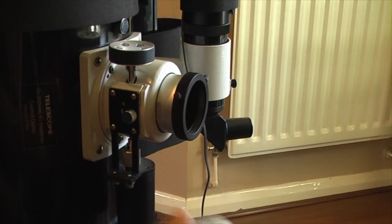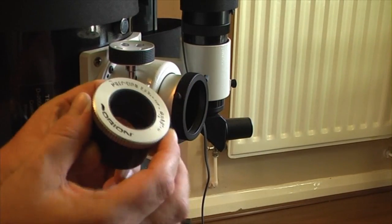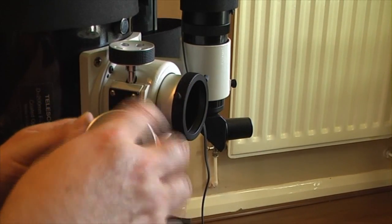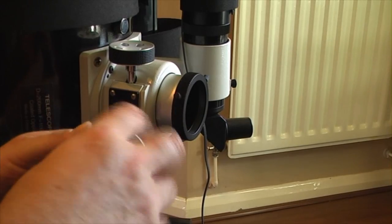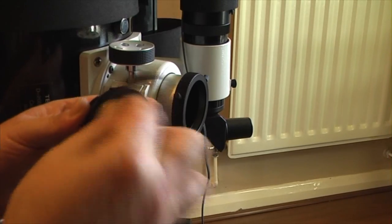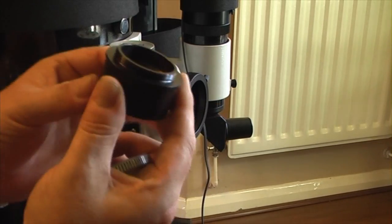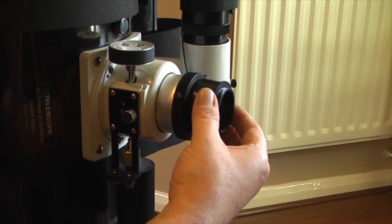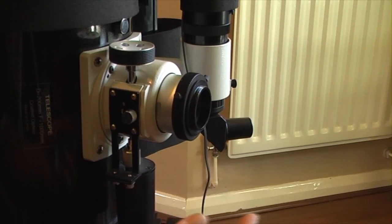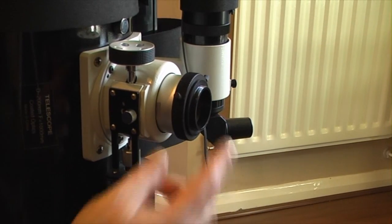But what if you've got a DSLR? Well, if you take one of these and unscrew the compression ring, take out the compression washer, we now have a T2 thread built onto there. Again straight into the adapter, T2 thread DSLR.